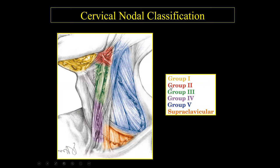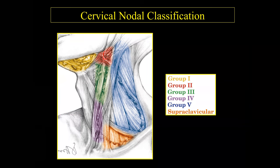The cervical lymph nodes are classified from groups 1 through 7, including the supraclavicular lymph nodes. Level 1s are below the chin — the submandibular lymph nodes. The remainder of the lymph nodes are almost like a string of pearls, where the clasp of the pearl necklace is at the top. The anterior lymph nodes are level 3 and level 4. The posterior limb is level 5, and they connect through the supraclavicular lymph nodes.